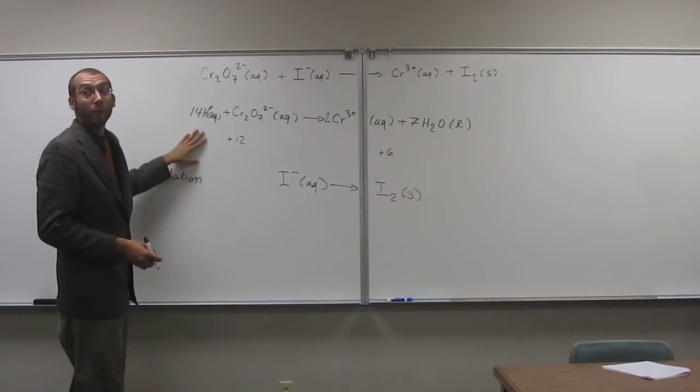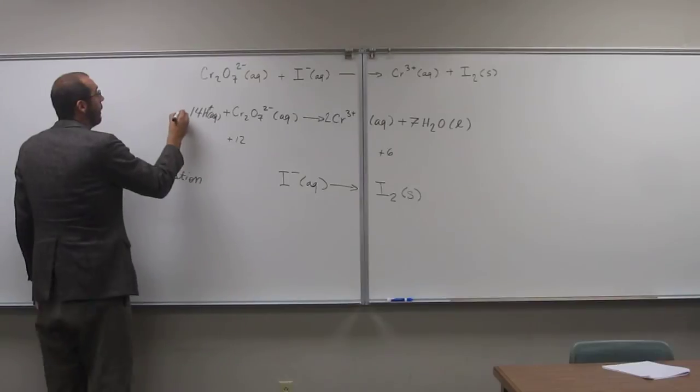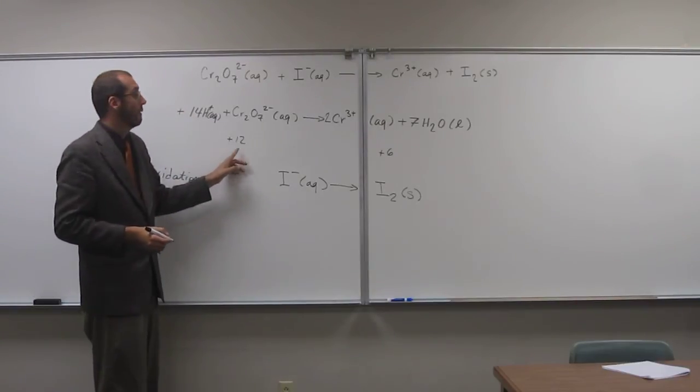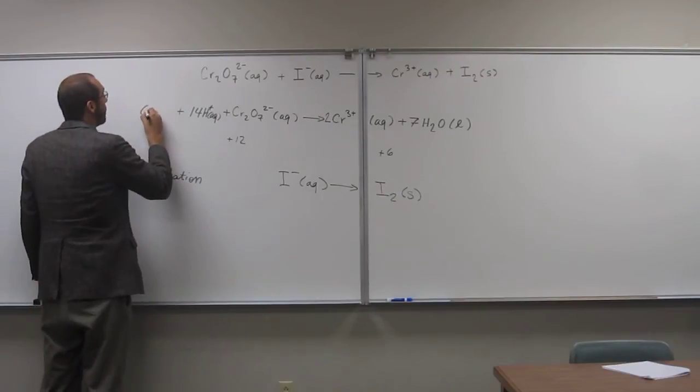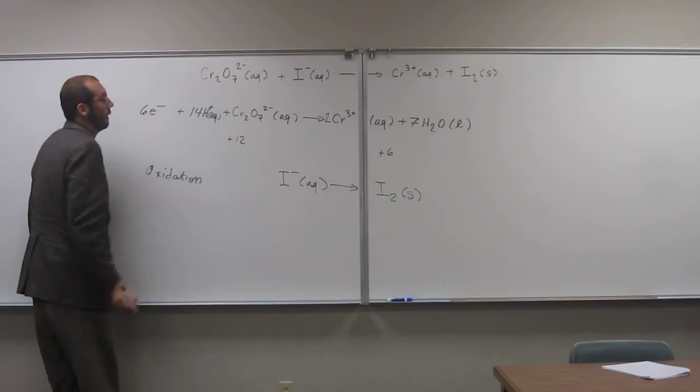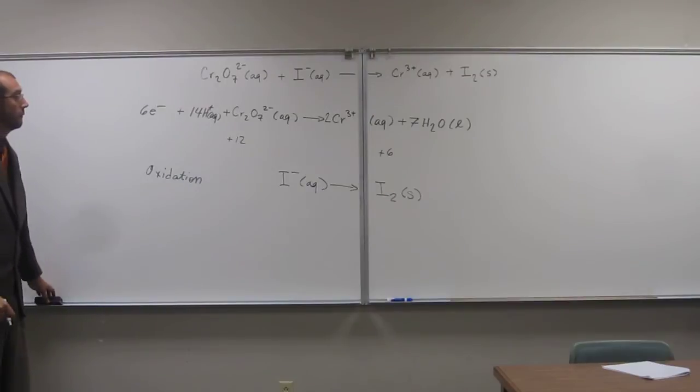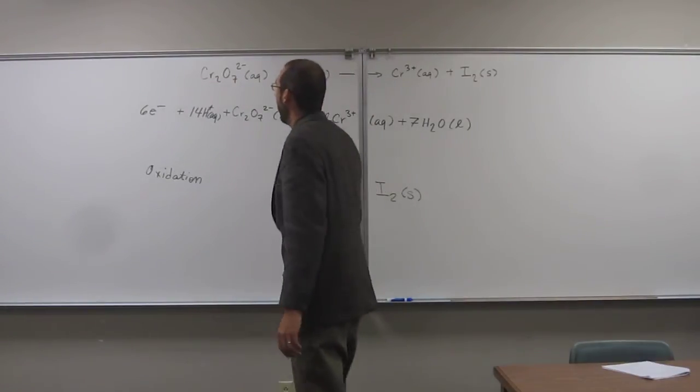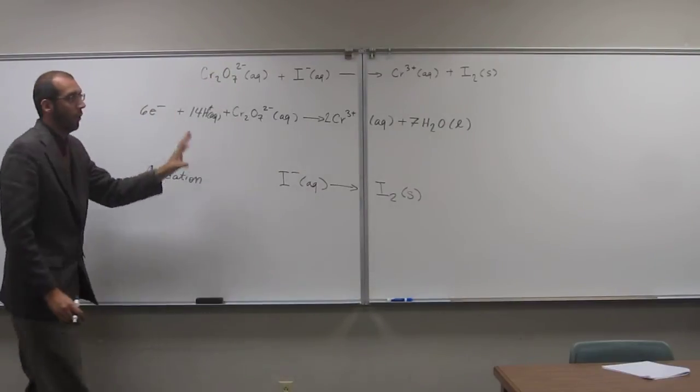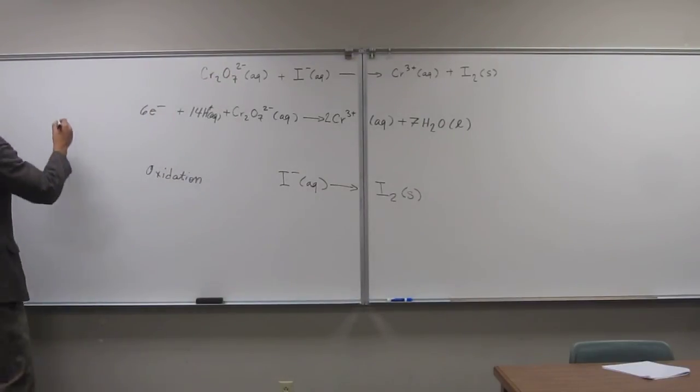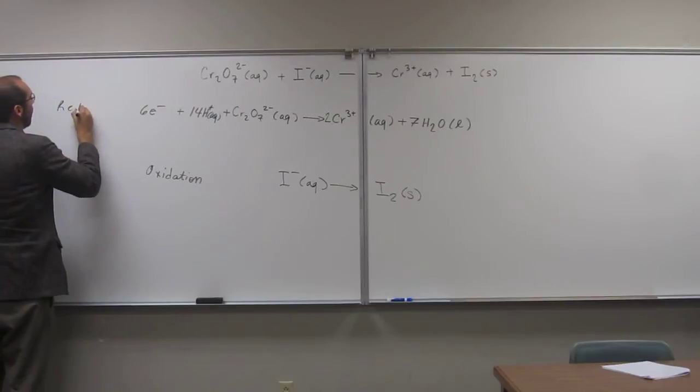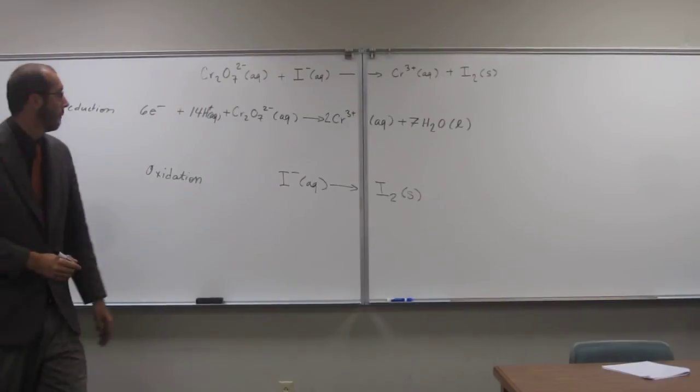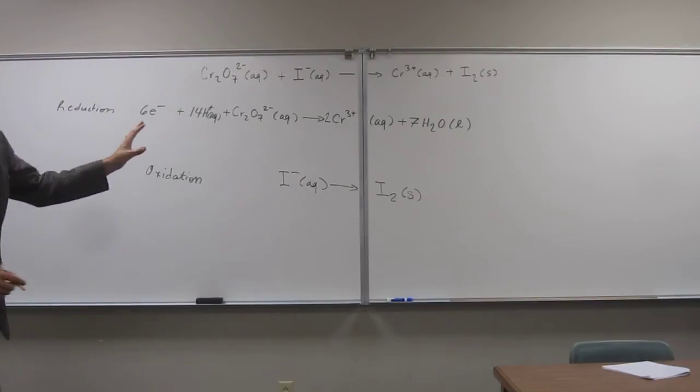So you're going to have to add them to the one that has the more positive charge. So that in this case would be the reactants. So we're going to add, remember, electrons are one negative, so we want to get to plus six. We're going to add six electrons. Like that. So now if you're not sure, you want to make sure that it's going to be balanced, but it is. So I'm going to rewrite the reduction half-reaction. So you're cool with that one?